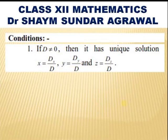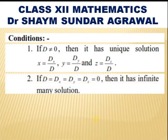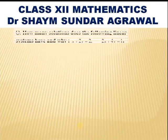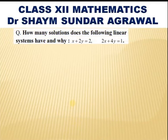If D is not equal to 0, we can say it has a unique solution: x = Dx/D, y = Dy/D, and z = Dz/D. And if all of D, Dx, Dy, Dz are 0, then it has infinitely many solutions. And if D is 0 but one, two, or all of Dx, Dy, Dz are non-zero, then it has no solution.